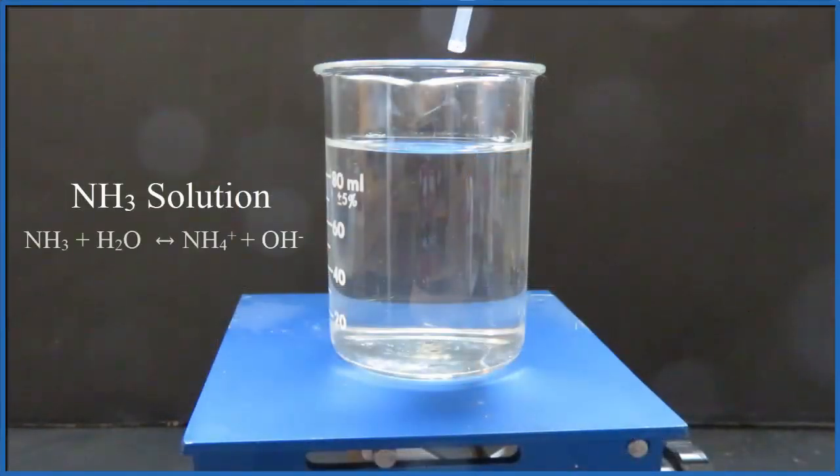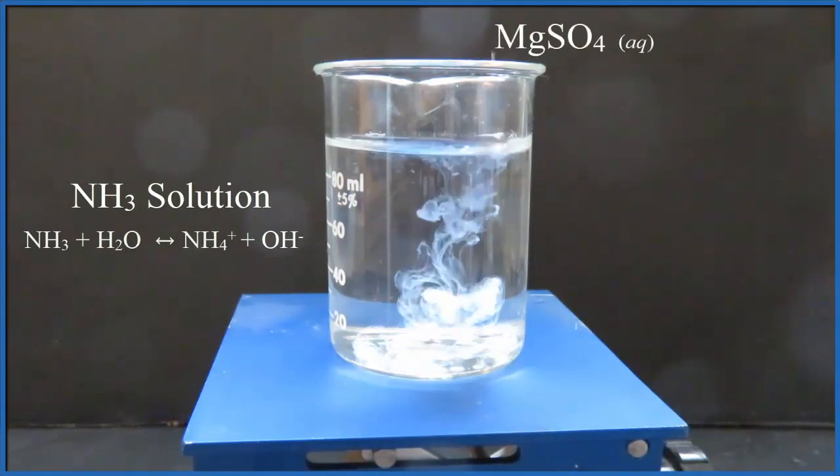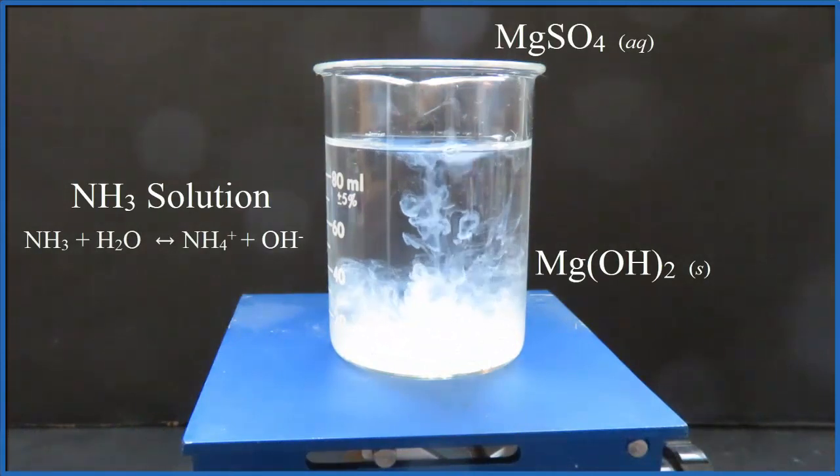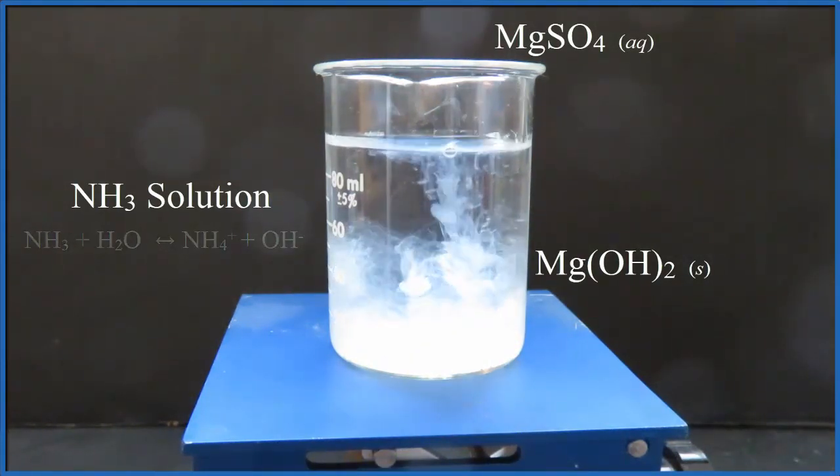So in the beaker, that's ammonia. We have a solution of ammonia and we drop in the magnesium sulfate and we get magnesium hydroxide. That's the solid we were talking about. That's our precipitate. So it's this white substance.